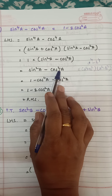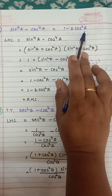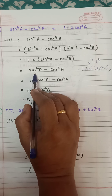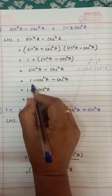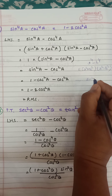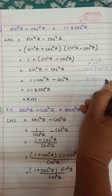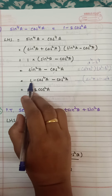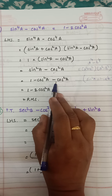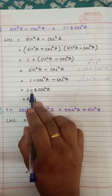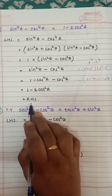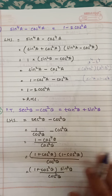That is copied over here. We want 1 minus 2cos²a, so for sin²a we apply the formula 1 minus cos²a. Substituting: (1 minus cos²a) minus cos²a becomes 1 minus 2cos²a. That equals the right hand side.